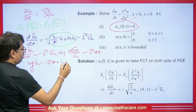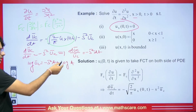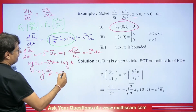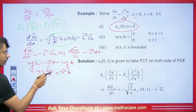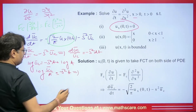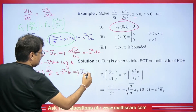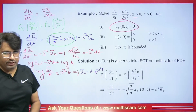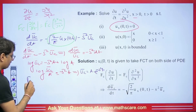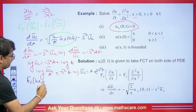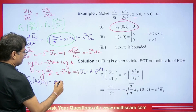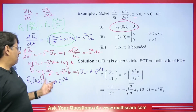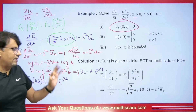To find A, we use the initial condition. Replacing t with 0 in equation (1), ū_c at t=0 equals A·e^0 equals A. This means A equals the Fourier cosine transform of u(x,0). The formula for the Fourier cosine transform is: root(2/π) times the integral from 0 to infinity of u(x,t)·cos(sx)·dx. With t replaced by 0, we compute the Fourier cosine transform of u(x,0).